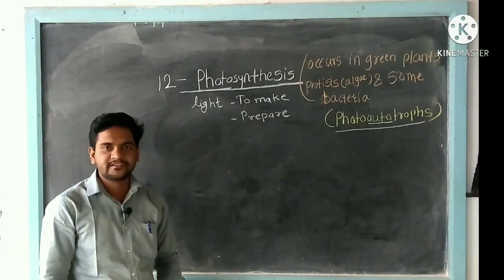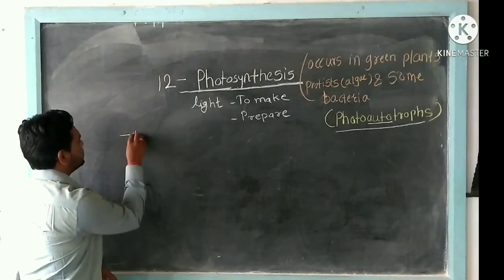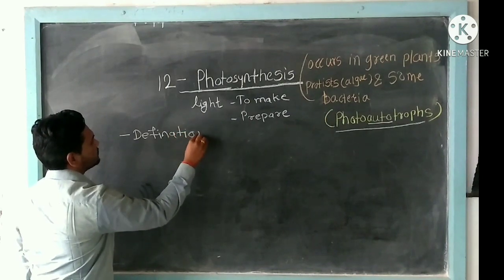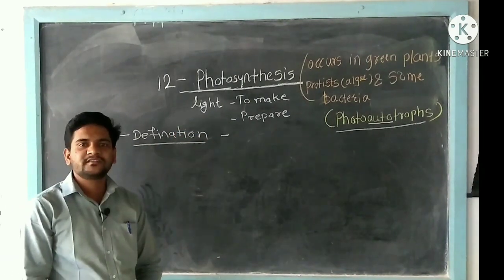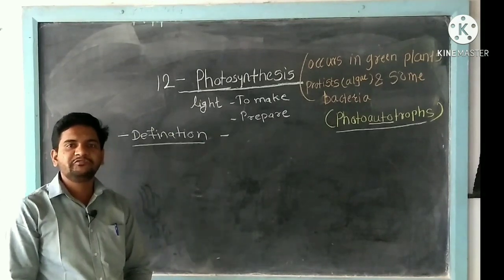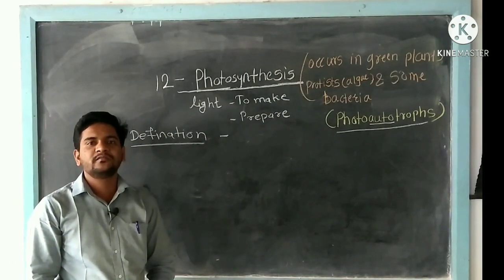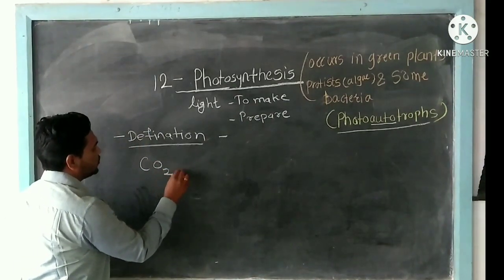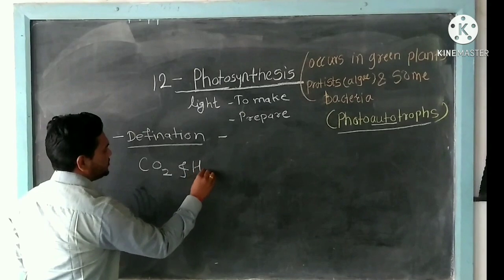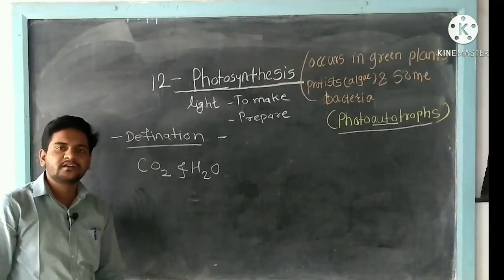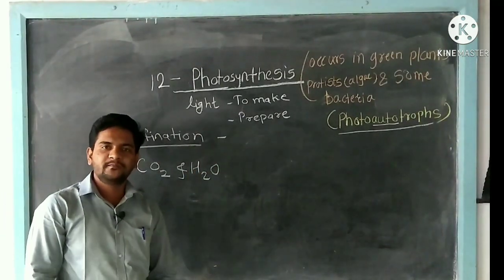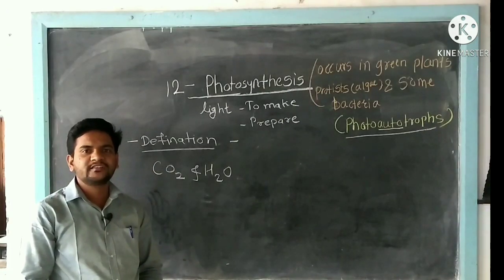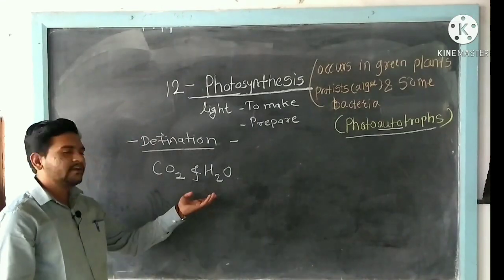Photosynthesis is the process in which plants synthesize organic material from CO2 and H2O, which are inorganic substances, with the help of sunlight. Plants make organic substances using inorganic substances like CO2 and H2O.